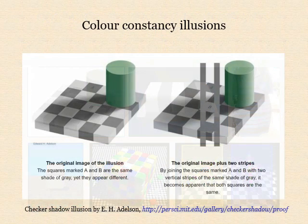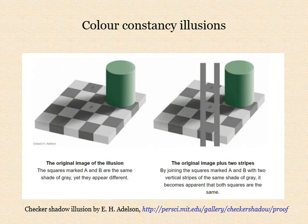An iconic example of a colour constancy illusion is neuroscientist Edward Adelson's Checker Shadow Illusion, published in 1995. In Adelson's words on his webpage, the squares marked A and B are the same shade of grey, yet appear different.